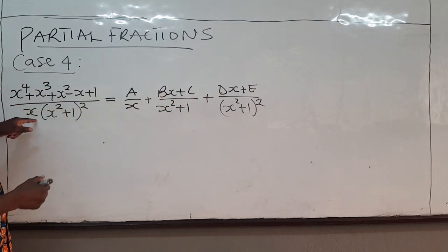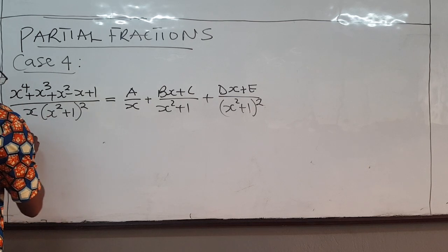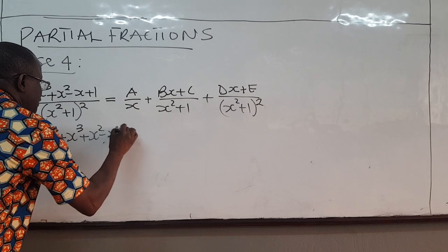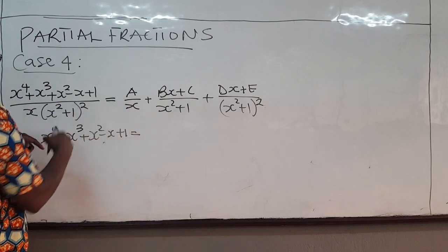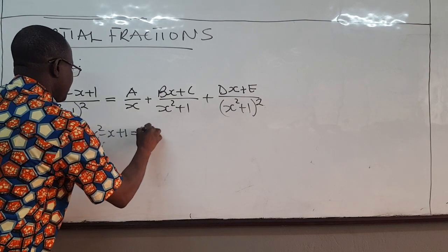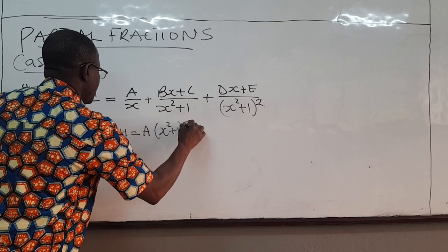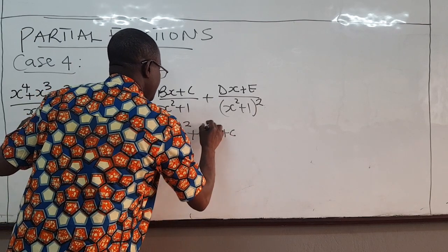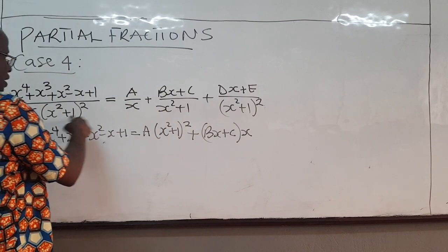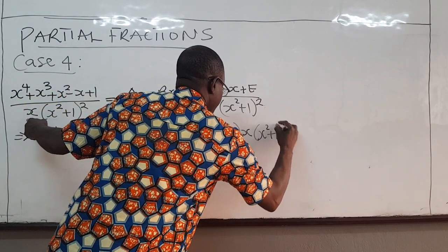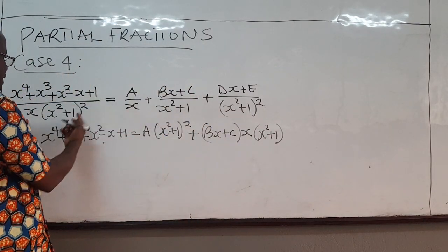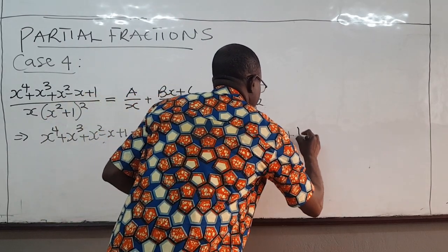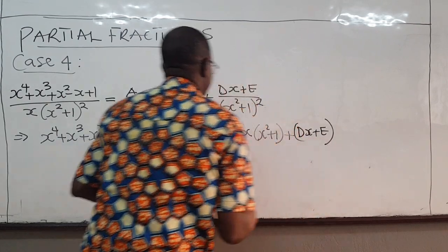Multiply throughout by the denominator. Multiplying gives x to the power 4, x to the power 3, x squared minus x plus 1 on the left. The denominator cancels accordingly: we get A times x squared plus 1 squared, plus Bx plus C times x, with one factor of x squared plus 1 cancelling, plus Dx plus E times x.